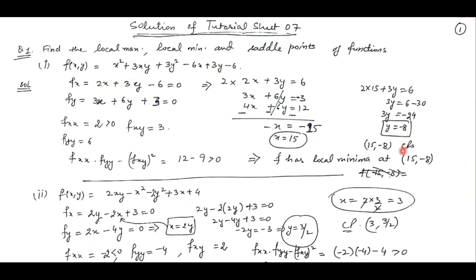So now we are having two equations in two unknowns x and y. We simplify these two equations and get the value of x and y. The critical point is (15, -8). Now we need to check whether the function assumes maxima or minima at this critical point. We find f of x, x — taking the derivative again with respect to x gives 2. Taking derivative with respect to y gives 6. And f of x, y is 3. Since f of x, x is positive and the discriminant is also positive, the function has local minima at the critical point (15, -8).